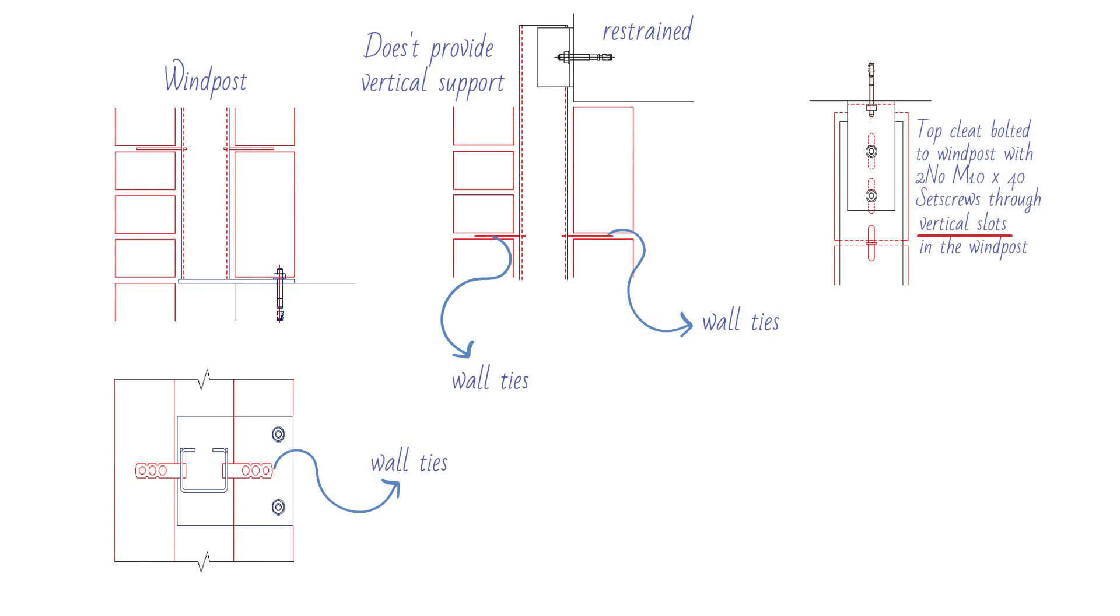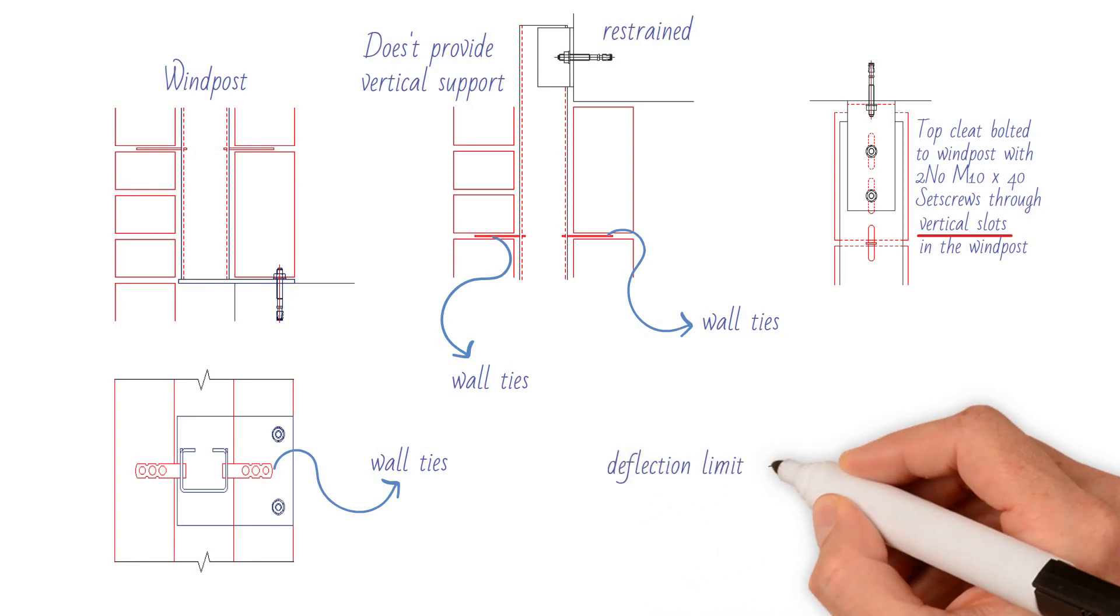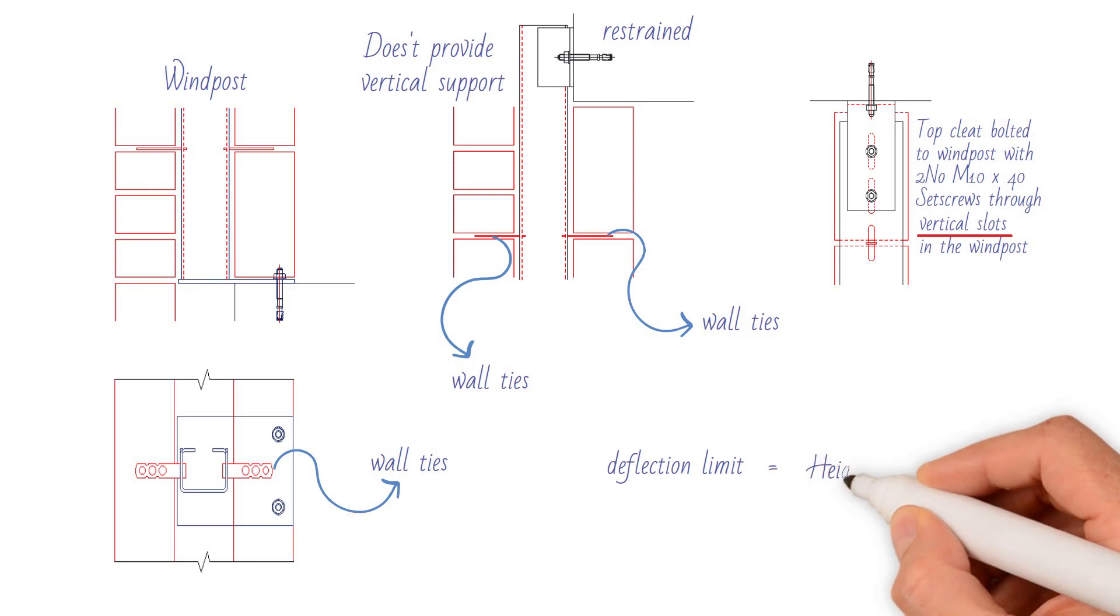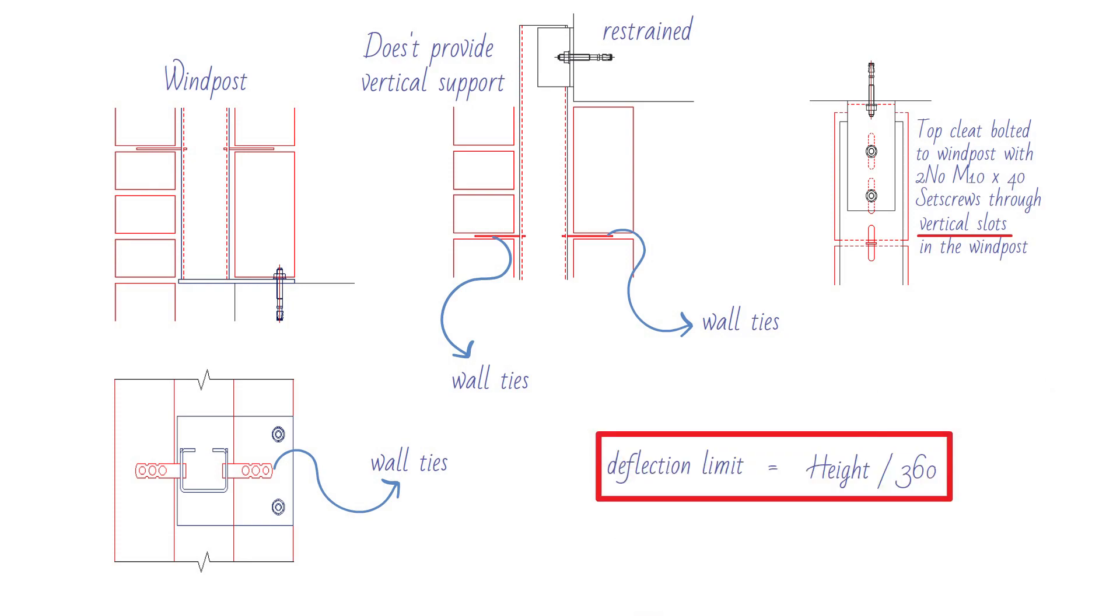Taking a worked example to design a windpost to ensure it doesn't deflect any more than the deflection limit, which is typically taken as height over 360 for simply supported windposts.